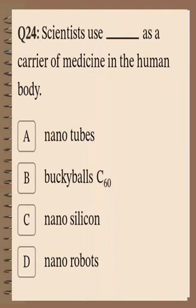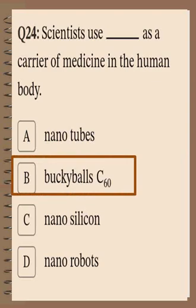Question number 24: Scientists use what as a carrier of medicine in the human body? As discussed multiple times in this lesson, the answer is buckyball or Carbon-60.